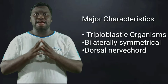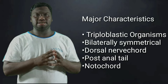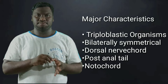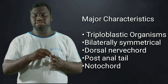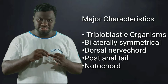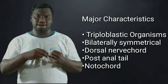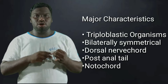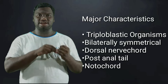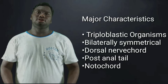The major characteristics of Proto-chordata are: they are triploblastic, coelomates, and bilaterally symmetrical. They have a dorsal nerve cord, a post-anal tail, and another major feature is the presence of a notochord.